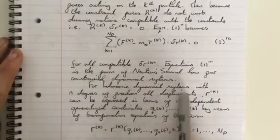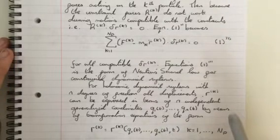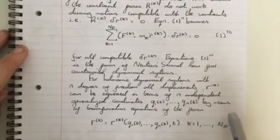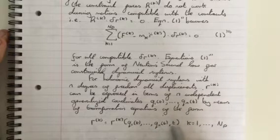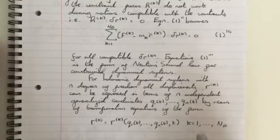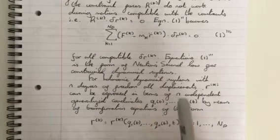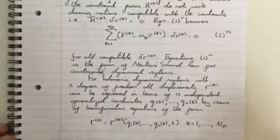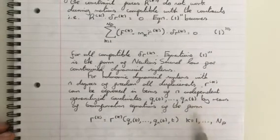For holonomic dynamical systems with n degrees of freedom, all displacements Rk can be expressed in terms of n independent generalized coordinates q1 to qn by means of transformation equations of the form Rk equals Rk of q1 to qn and t, as k equals 1 to np. A holonomic dynamical system is one that restricts the trajectories of all particles, restricting their displacements onto a smooth manifold. That's a simple definition. I will do videos on holonomic dynamical systems in the future. So that is our transformation equations that should be quite familiar.